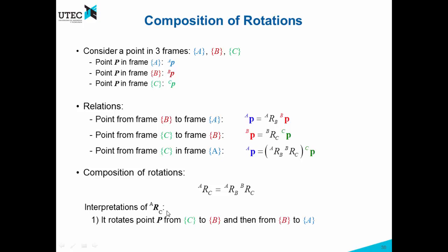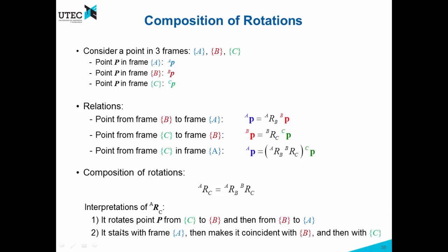The first interpretation of this rotation means the following: it rotates a point P from C to B, and then from B to A, so we get from C to A. The second interpretation is: it starts with frame A, then makes it coincident with frame B, and then makes it coincident with frame C — so at the end, A is going to be coincident with frame C. These two interpretations will be useful later.